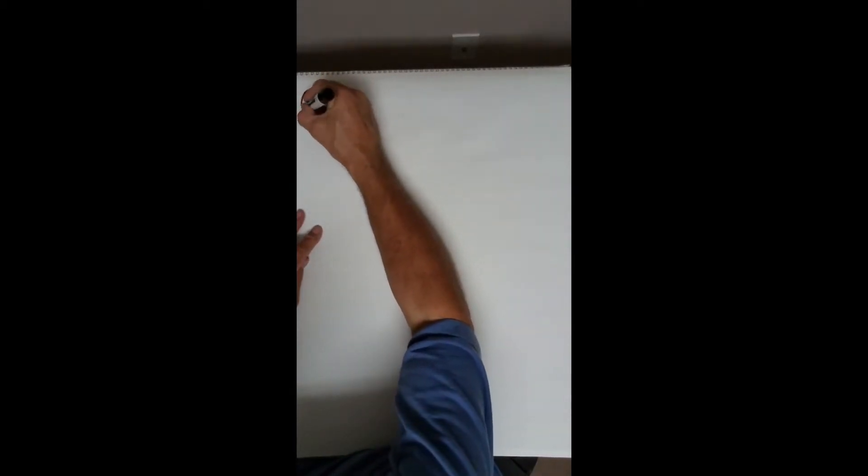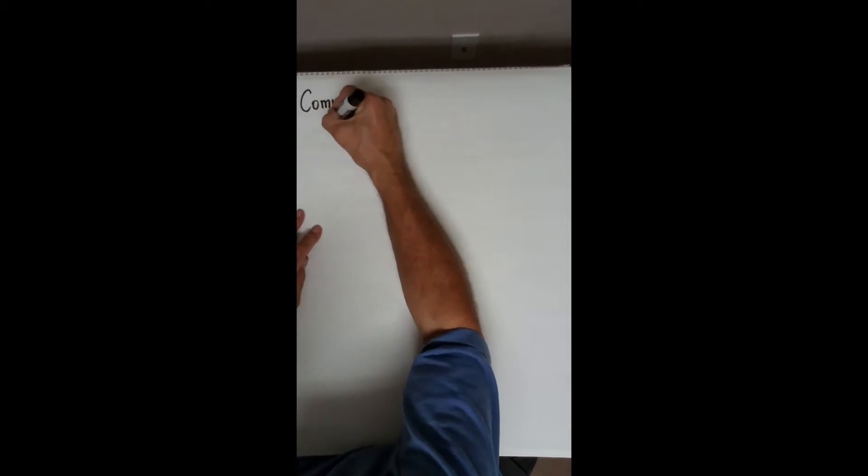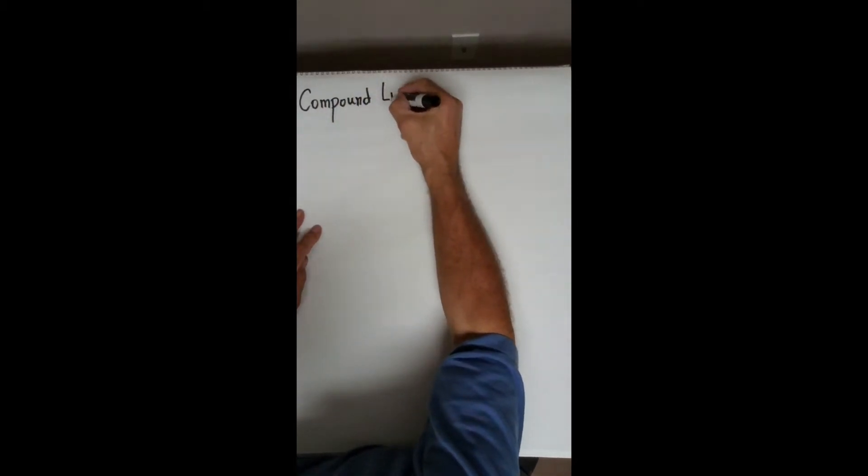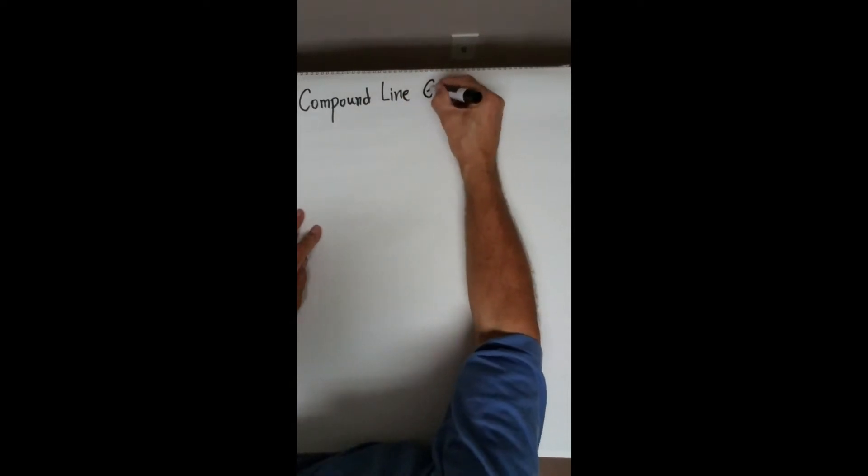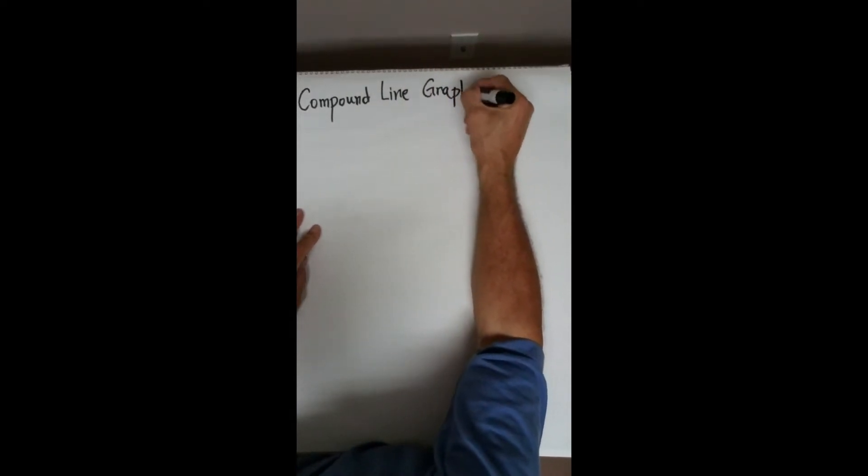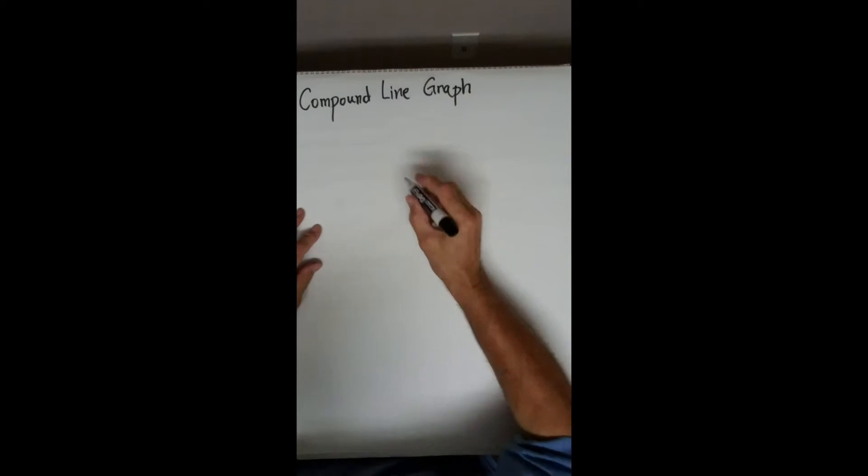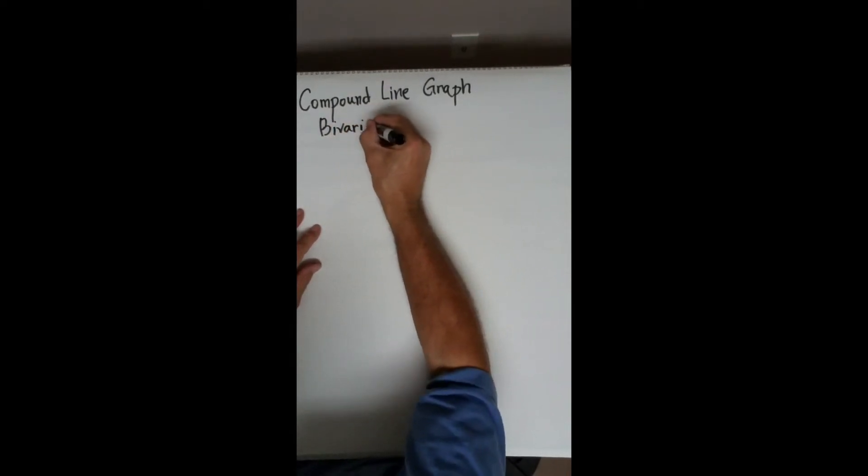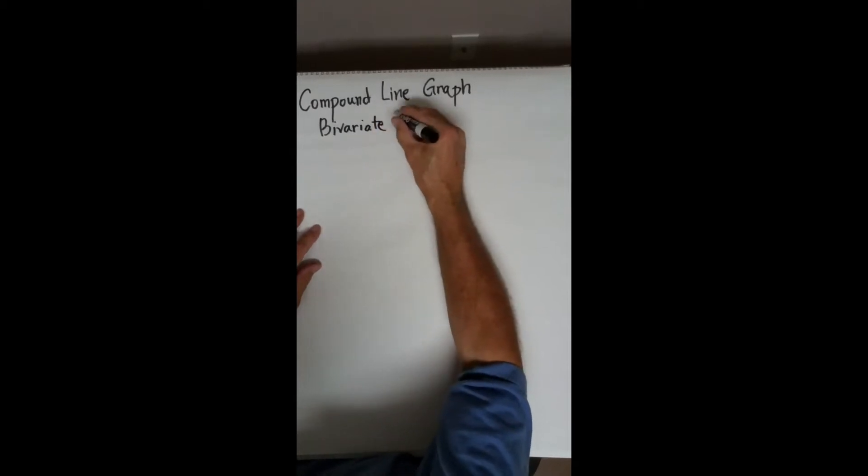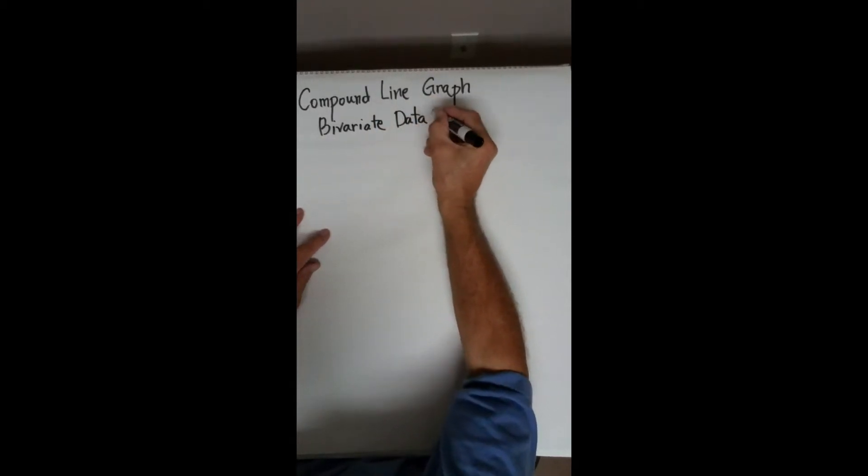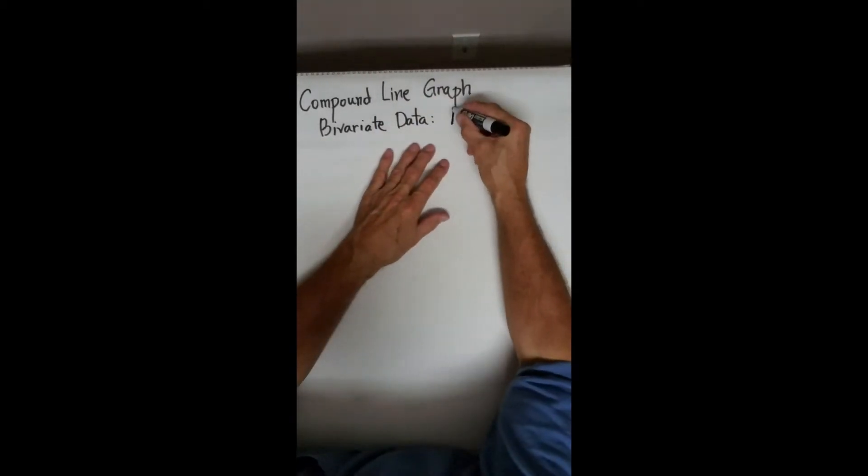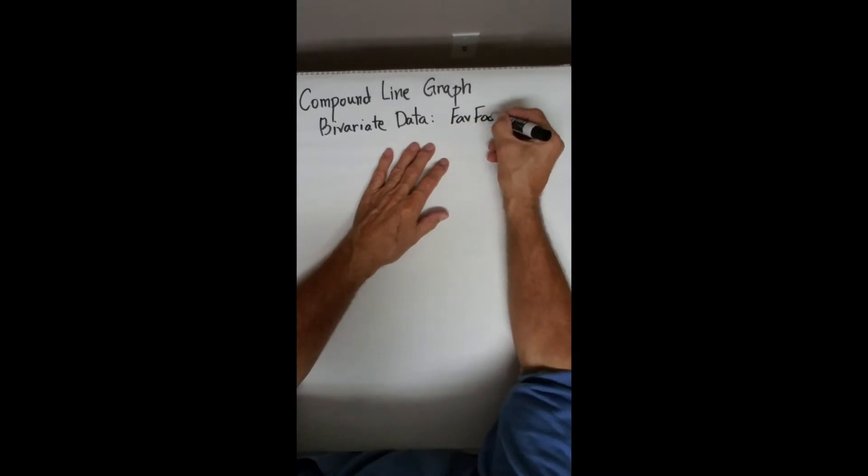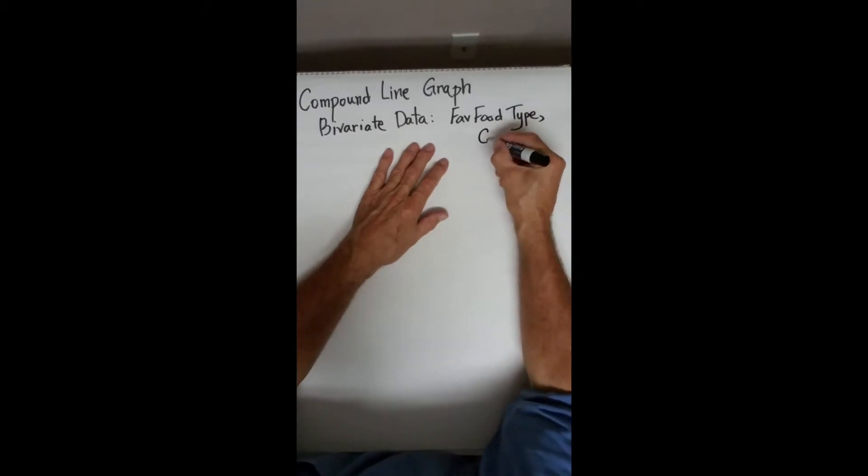In this video, I'm very quickly going to go back and look at the compound line graph. I'm going to use this for bivariate data, and that's going to be our food type, our favorite food type and gender.